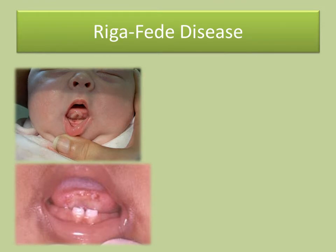Riga Fede disease is considered a variation of traumatic eosinophilic ulceration. It typically appears between one week and one year of age, presenting as traumatic ulceration of the anterior ventral surface of the tongue. This condition often develops in association with natal or neonatal teeth.